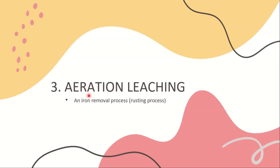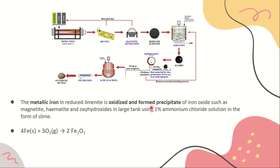The purpose of sieving and magnetic separation is to remove the products of reduction from the gangue minerals such as coal and char. The removed char is recycled back to the rotary kiln for the heating purpose in the reduction process. The product is reduced ilmenite, which mainly consists of metallic iron grains embedded in a matrix of titanium dioxide. Since we want the titanium dioxide, we need to rust out the metallic iron from this matrix — this is done by aeration.